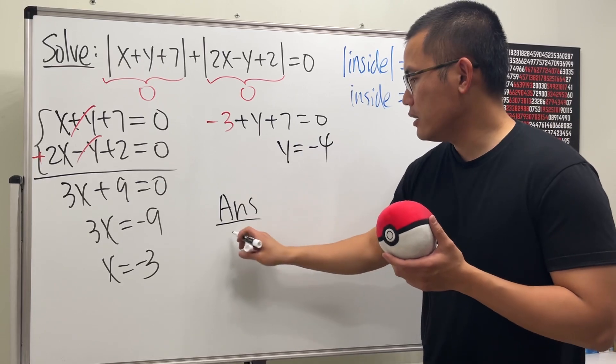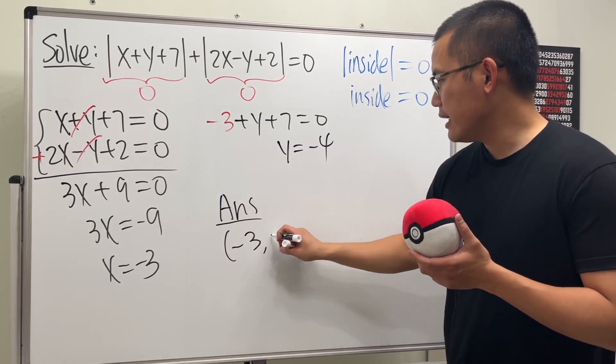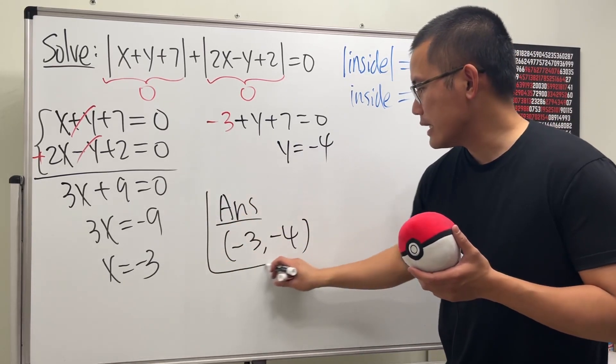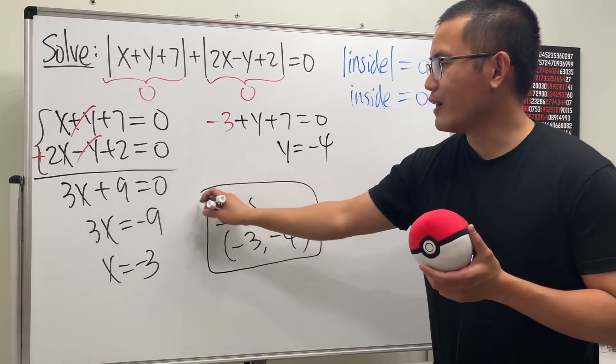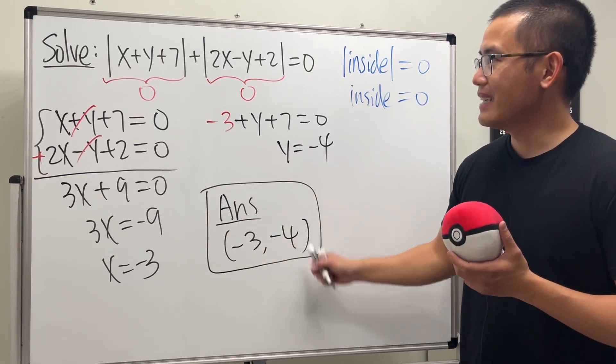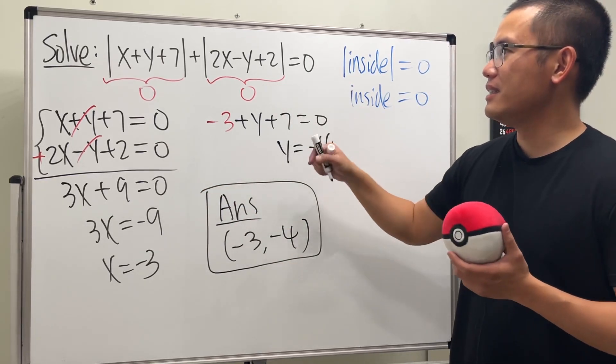So the answer is x equals negative three and y equals negative four. And with that, we are done. That's the key!